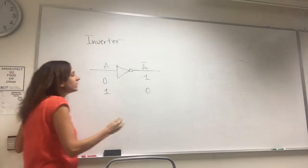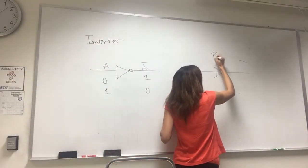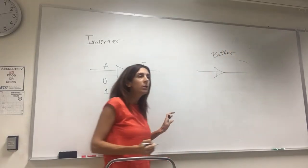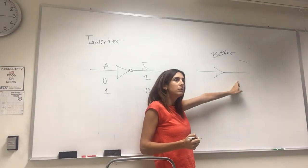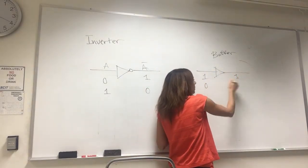If you see only an arrow, that's a buffer. What is a buffer? That means whatever is your input, the same is at the output. If you have one here, you get one. If you have zero here, you get zero.